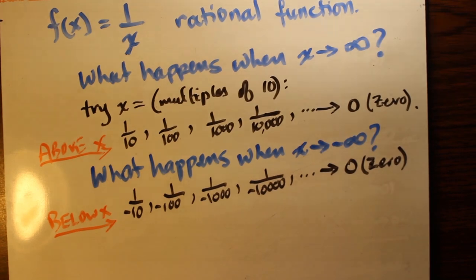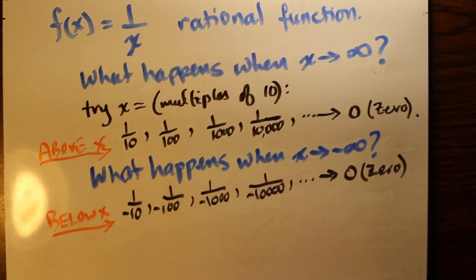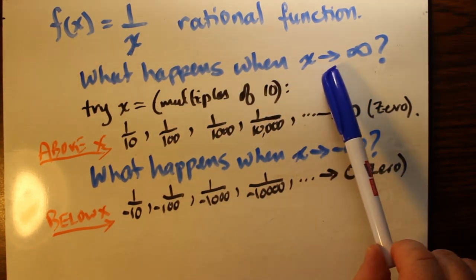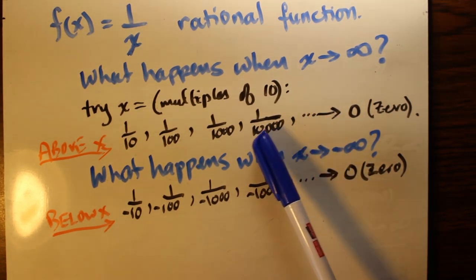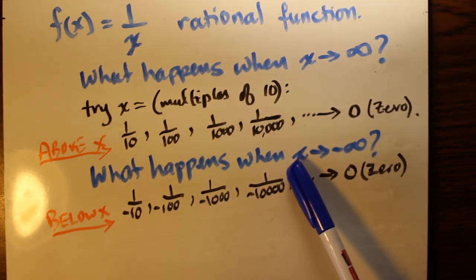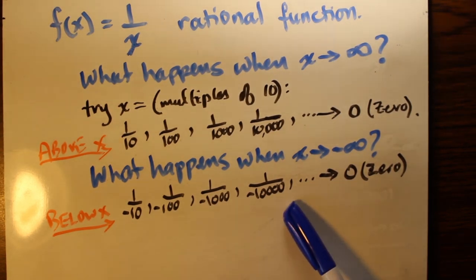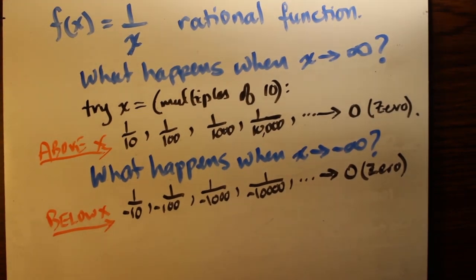Now what happens when x approaches positive infinity? The first part is to try multiples of 10 as a substitution for x. So we see 1 over 10, 1 over 100, 1 over 1,000, 1 over 10,000. The denominator gets very large, and so the function as a whole gets closer and closer to zero. But keep in mind that 1 over 10,000 is still a positive number, so we're approaching the x-axis from above.